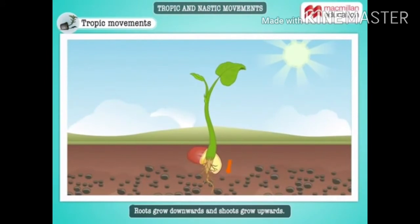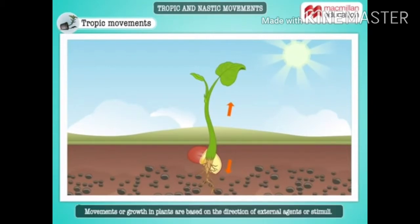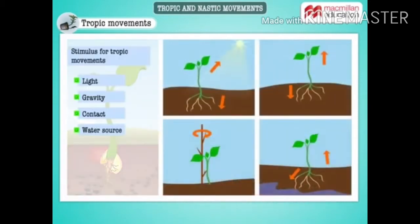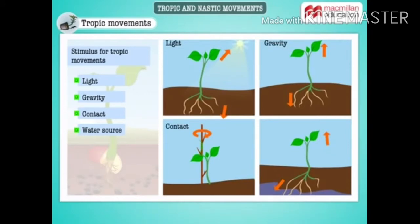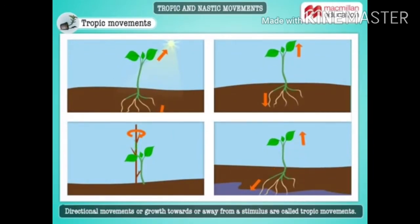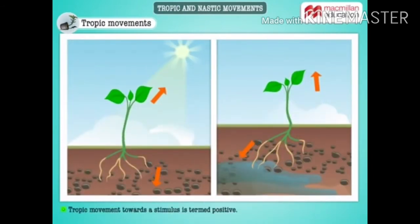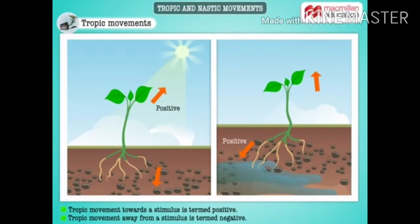Roots growing downwards and shoots growing upwards is a common phenomenon in plants. These movements or growth in plants are based on the direction of external agents or stimuli, such as light, gravity, contact, or source of water. Directional movements or growth towards or away from a stimulus are called tropic movements. Tropic movement towards a stimulus is termed positive, while a tropic movement away from a stimulus is termed negative.